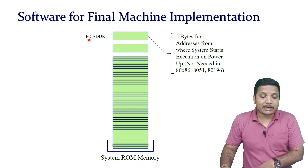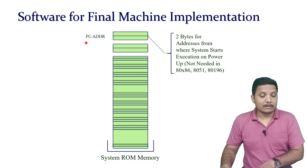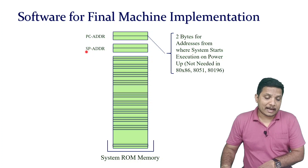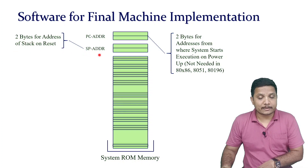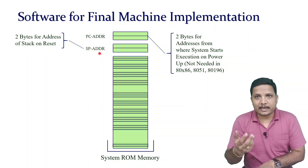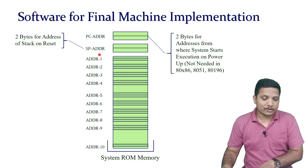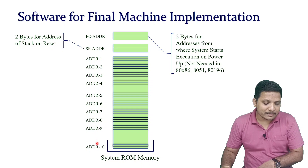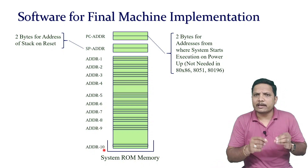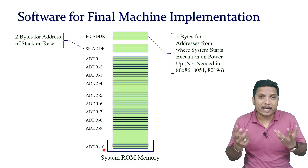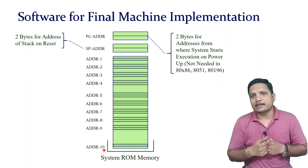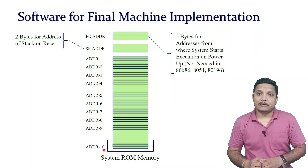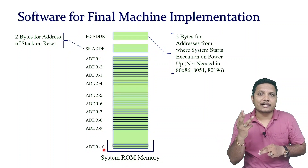In short, the program counter indicates the address of the next instruction. The next address register is the stack pointer, which indicates the top of the stack — a 2-byte address of the stack on reset. We also have different other address registers; here I have defined address register 1 to address register 10 just as an example. There can be many address registers based on the complexity of the system.